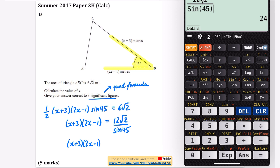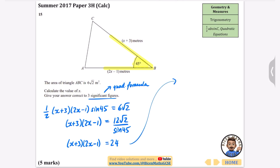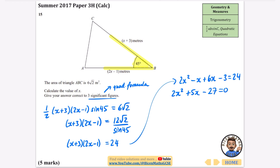Expanding the brackets: x times 2x is 2x squared, x times minus 1 is minus x, 3 times 2x is 6x, and 3 times minus 1 is minus 3, all equal to 24. Collecting terms onto one side: 2x squared plus 5x minus 27 equals 0. Since they want three significant figures, this confirms we need the quadratic formula, where a = 2, b = 5, and c = −27.